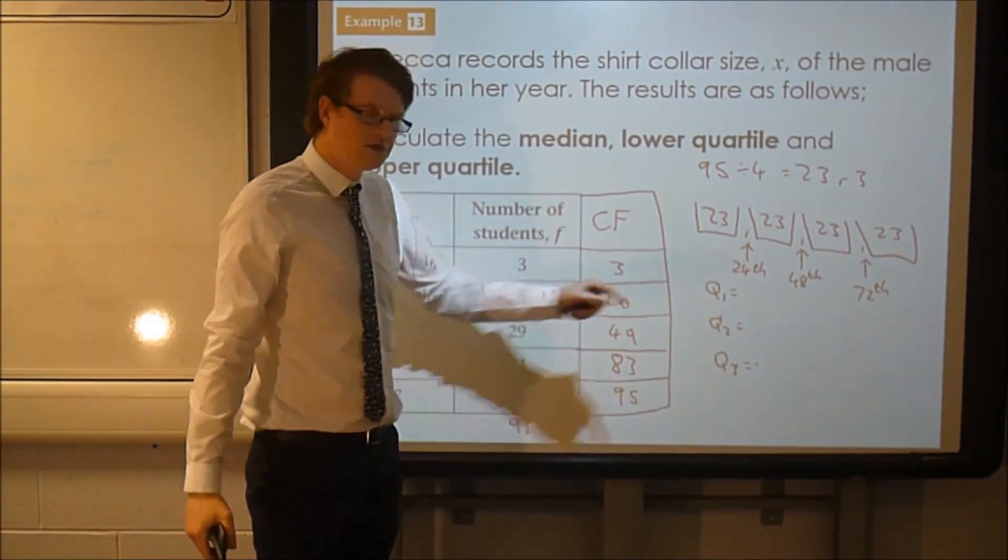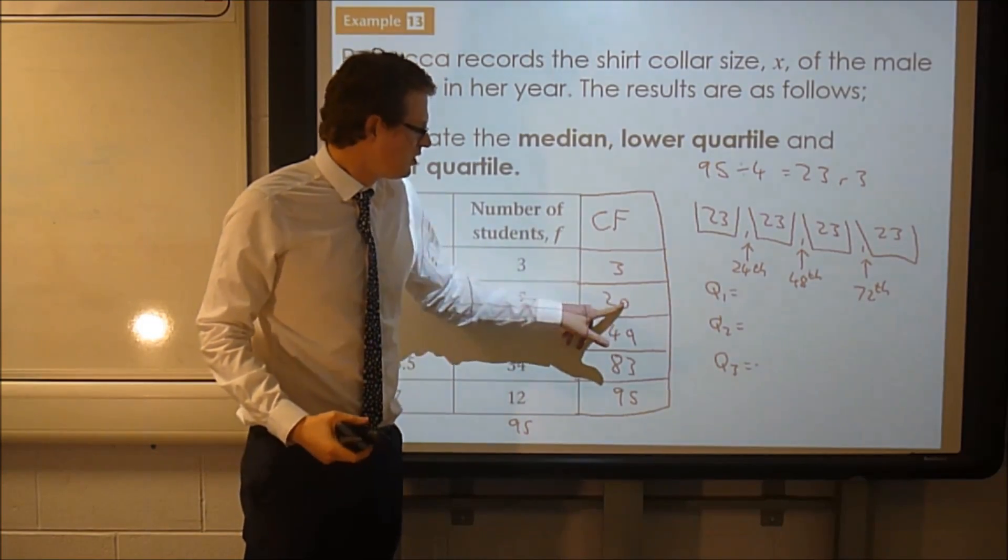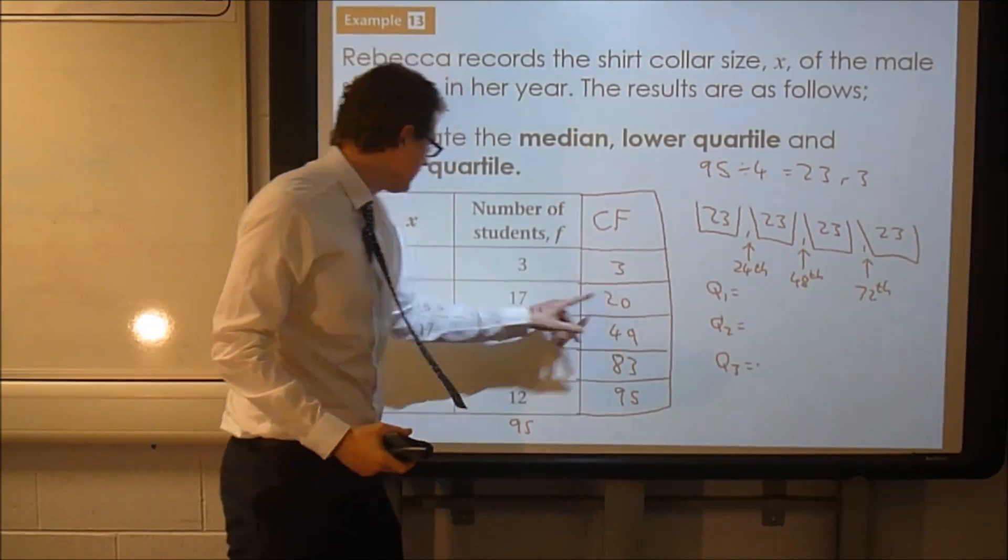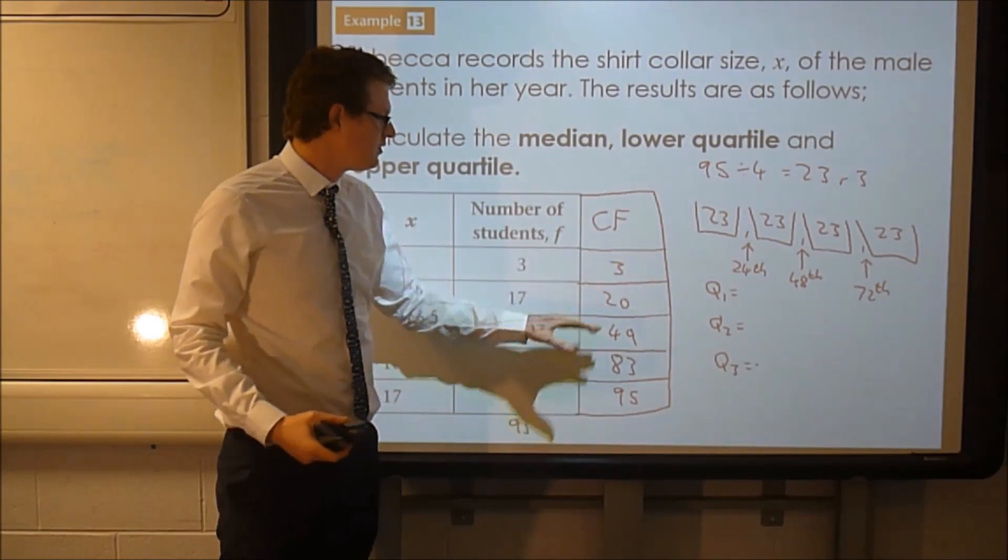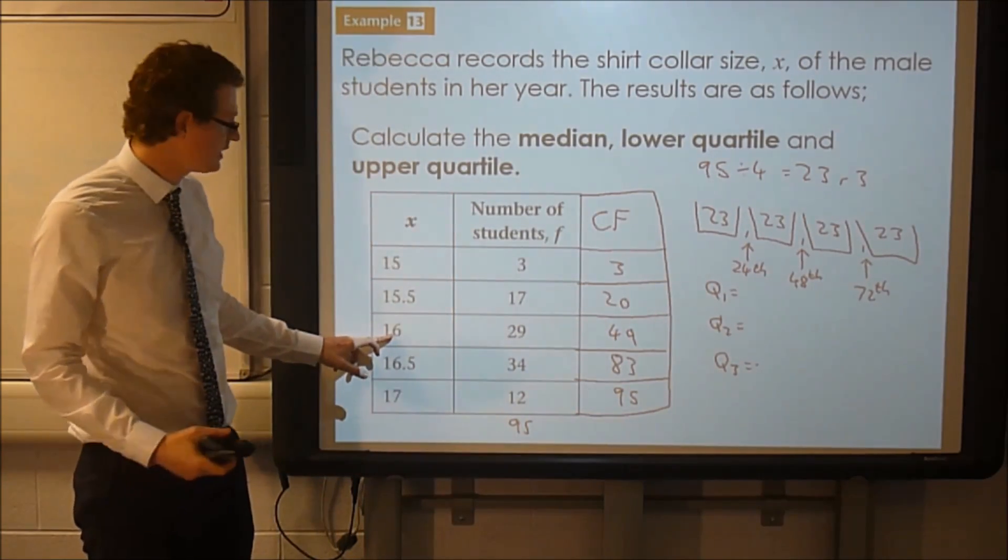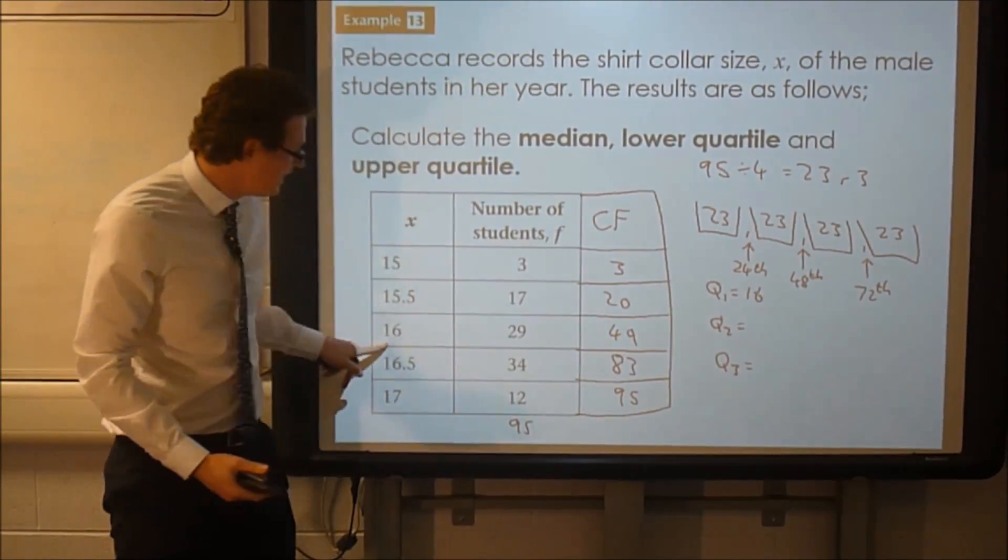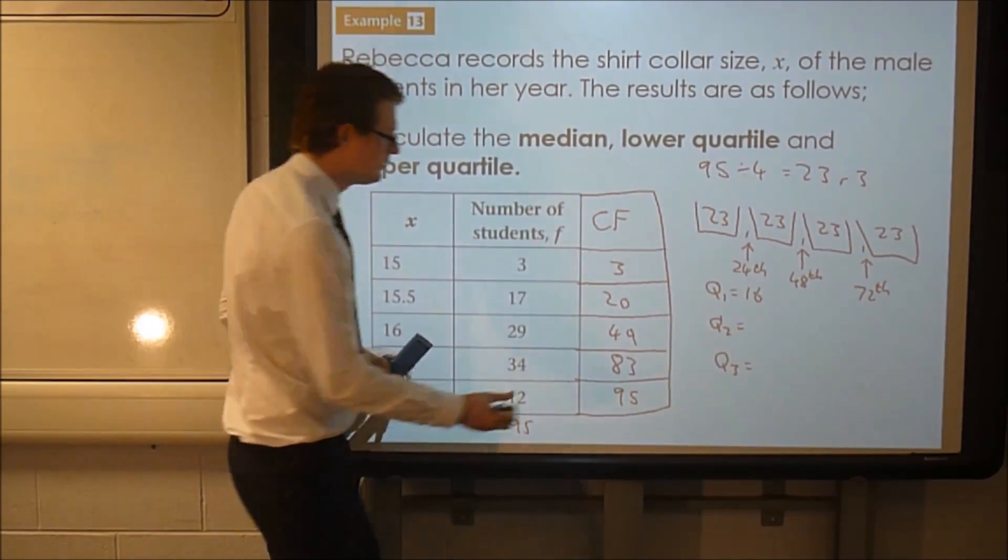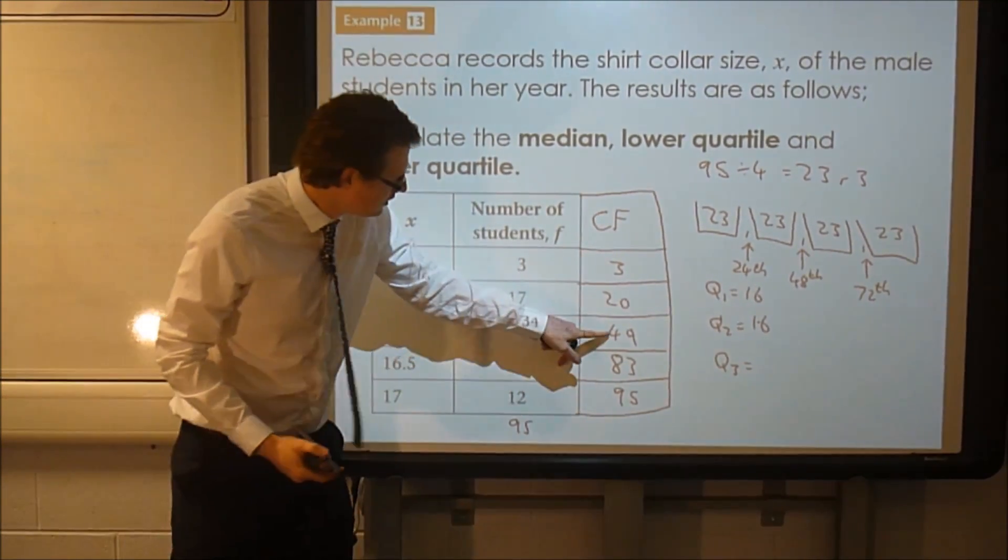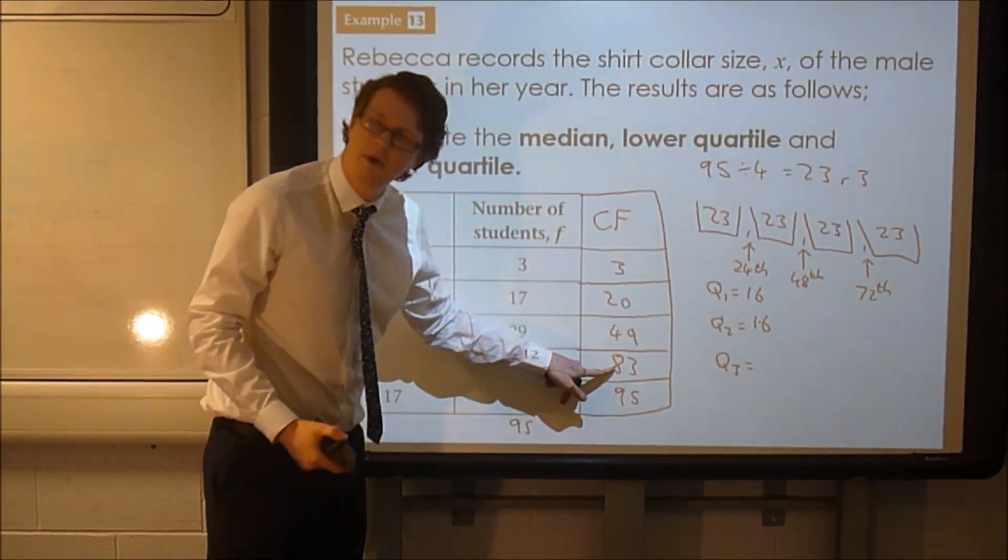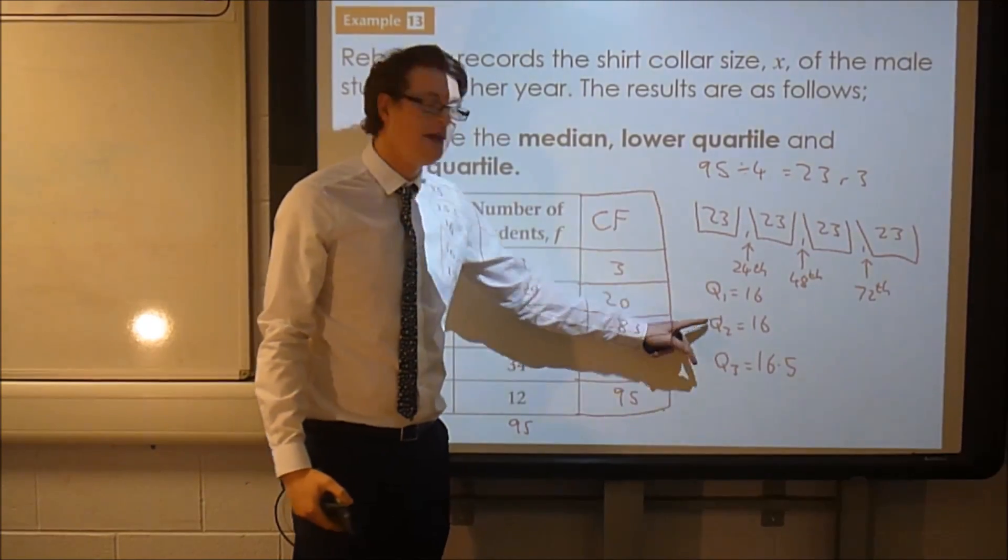Now we can use our cumulative frequency hour to work out where the 24th value is. The first three values are 15. The next 17, so 20 values, they're not quite the 24th value, they're going to be 15.5. Ah, so there were 49 that were 16 or less. Well there's only 20 up so far, so the 24th one must be a bit into these 16ths, so it must have been 16. The 48th value, well actually the 49th value is 16, so the 48th one must be as well. And now we're finding the 72nd value for the third quartile. Well yeah, it's definitely past that, it's past the first 49 values, it's not gone past this, it must be in this group, so 16.5. So there's our lower quartile, our median, and our upper quartile.